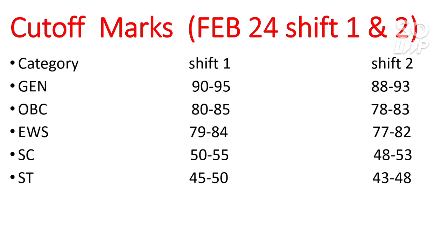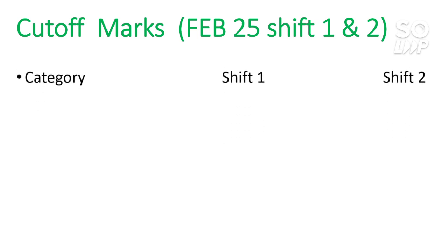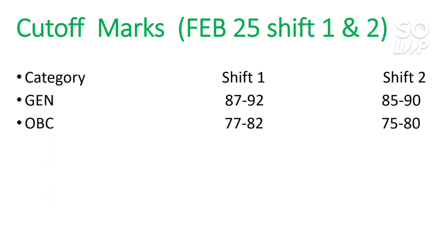As you know, progressively day by day the difficulty level of the paper increased, so you need to score fewer marks if your exam was on the 25th or 26th. For February 25th, Shift 1 and Shift 2: for General, Shift 1 requires 87 to 92 marks and Shift 2 requires 85 to 90 marks. For OBC, Shift 1 is 77 to 82 and Shift 2 is 75 to 80. I'm giving a range because the exact marks may vary by four to five marks up or down — if you're within this range, you are safe to clear the cutoff. For EWS, Shift 1 is 76 to 81 and Shift 2 is 74 to 79.